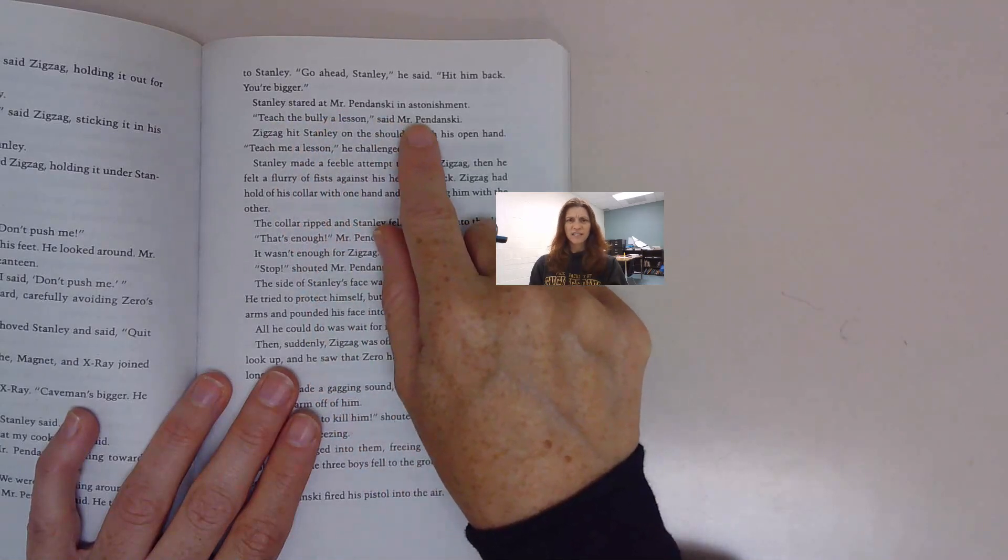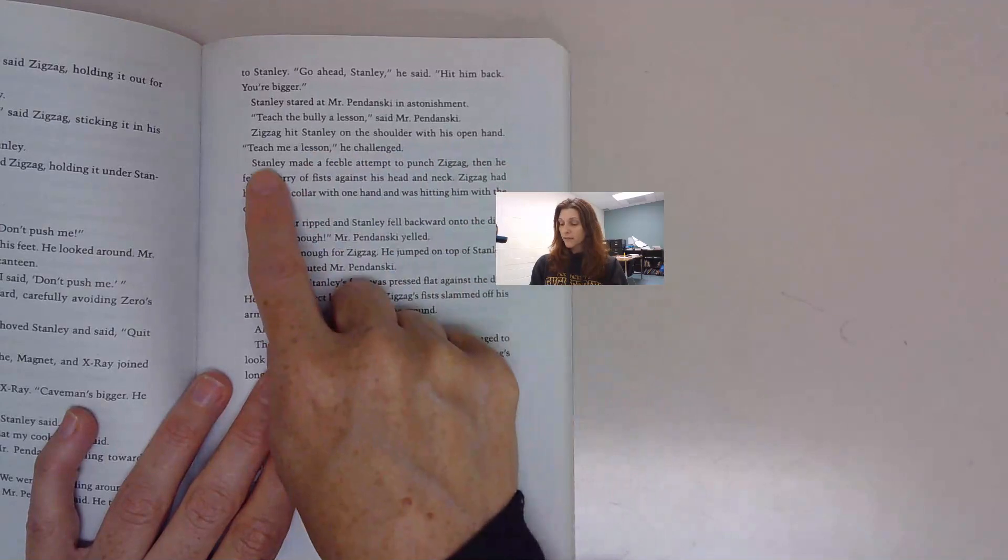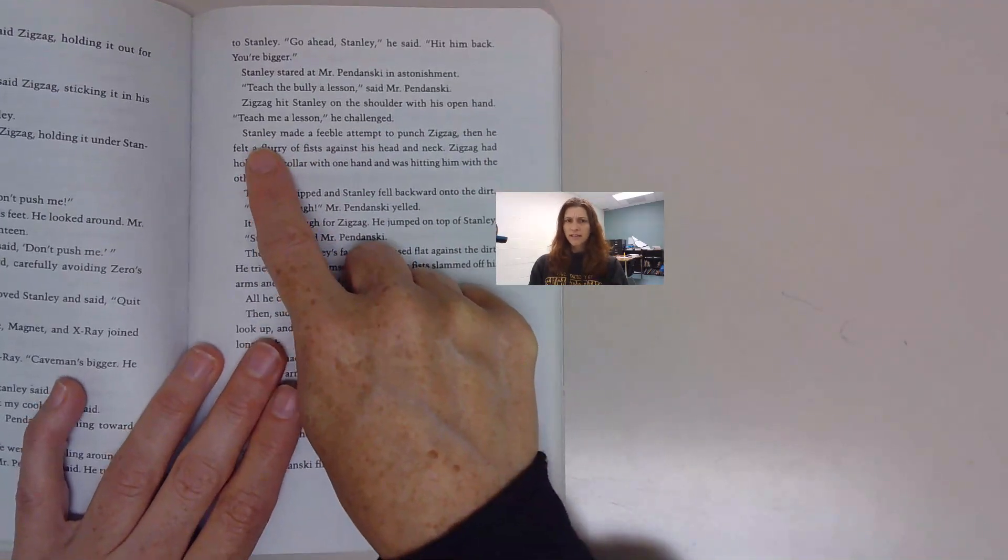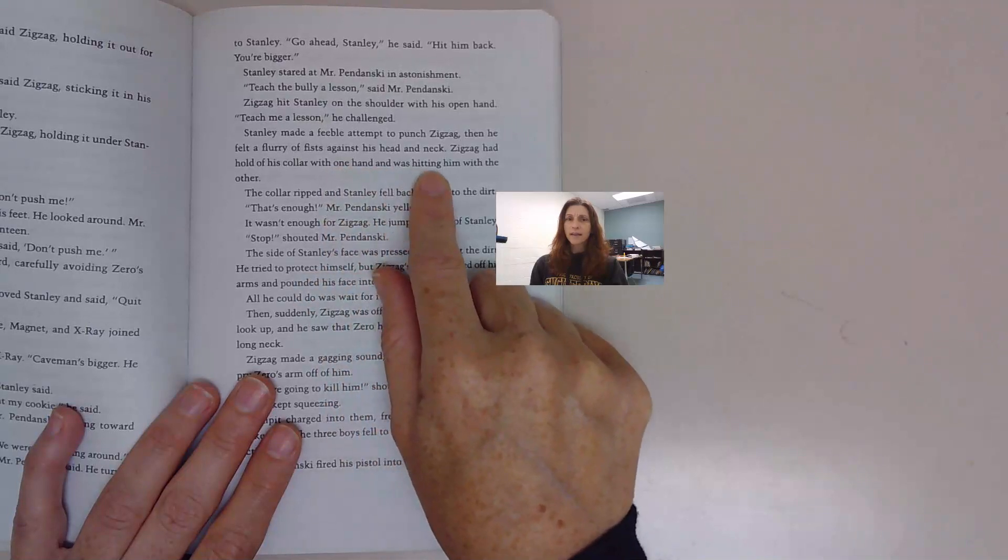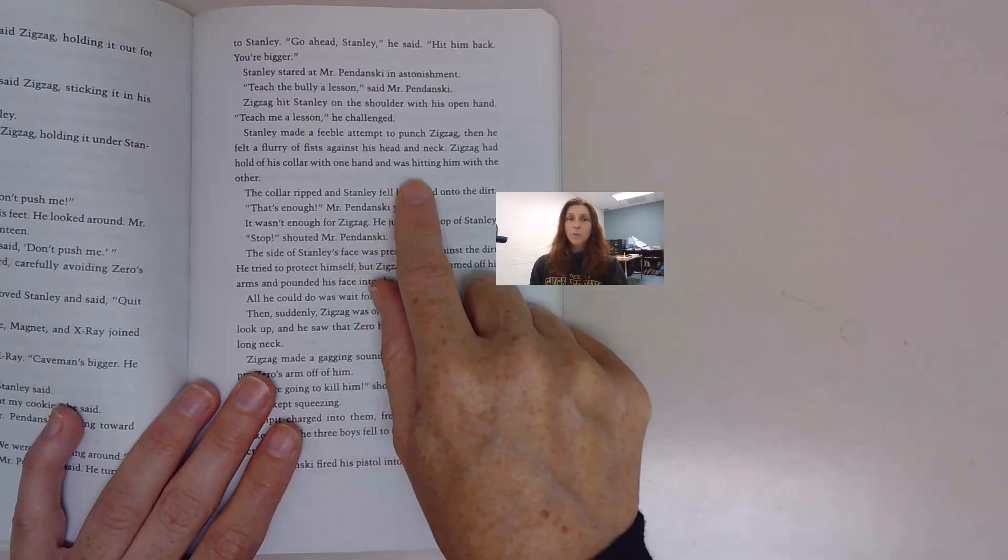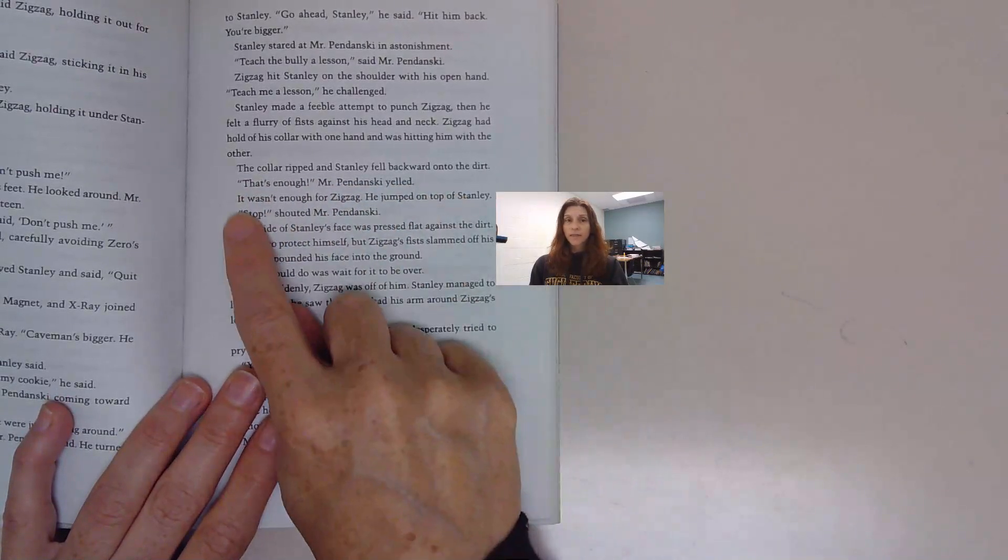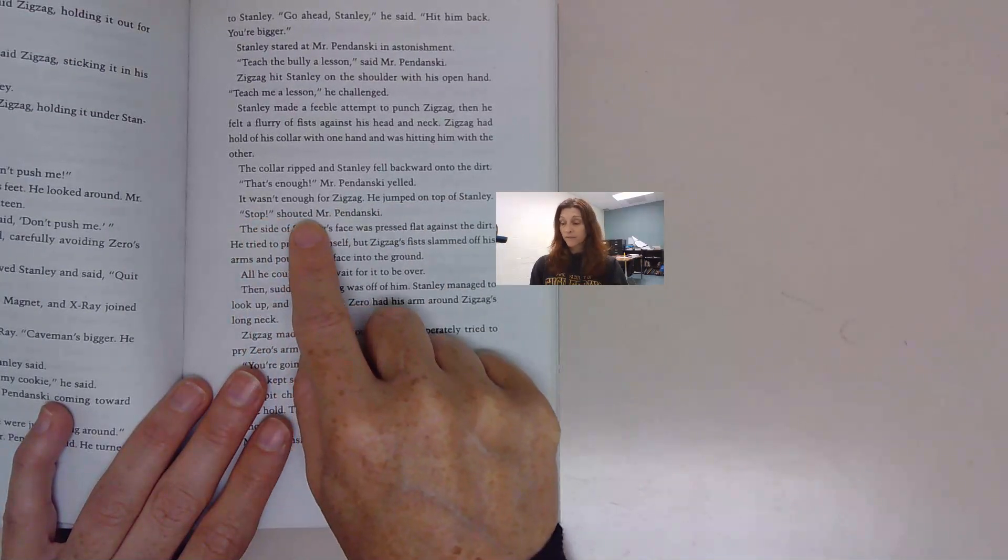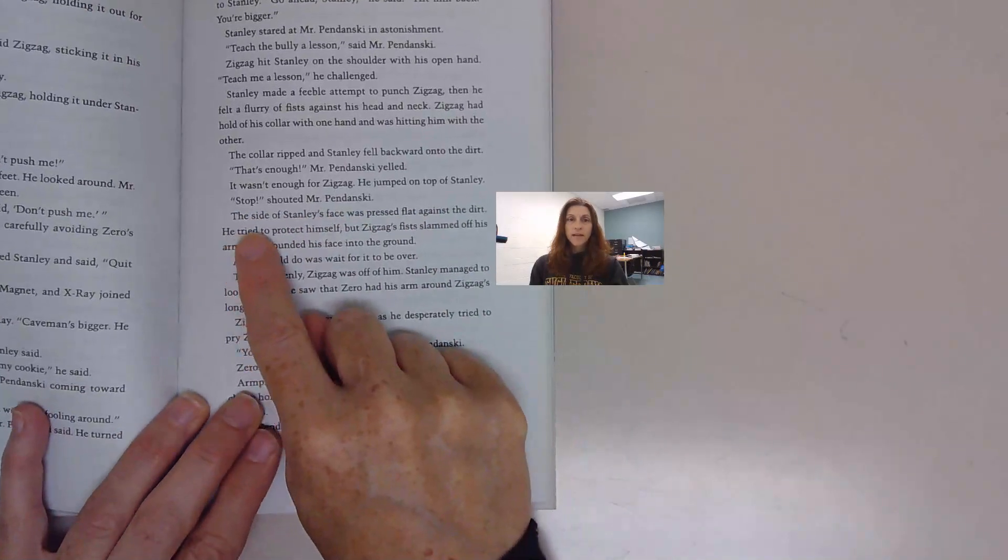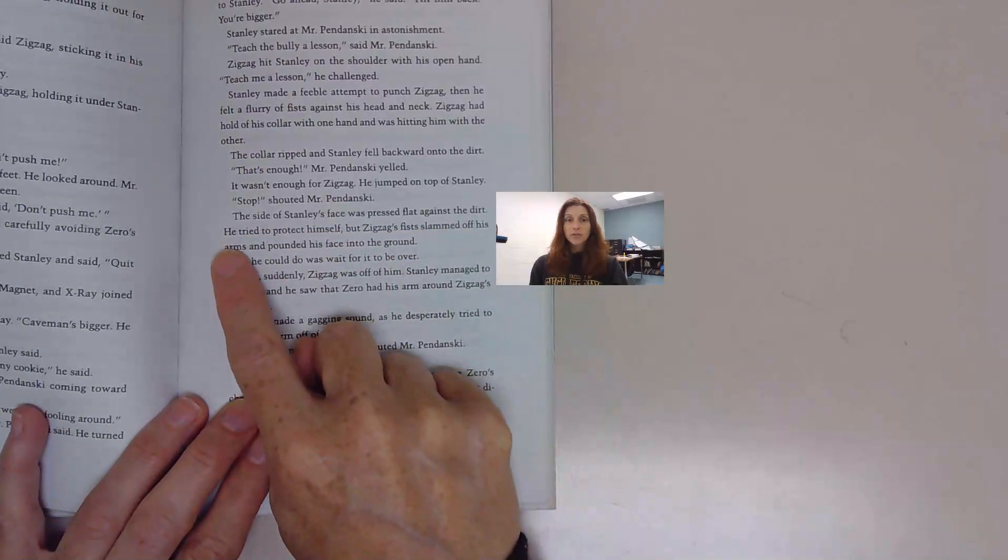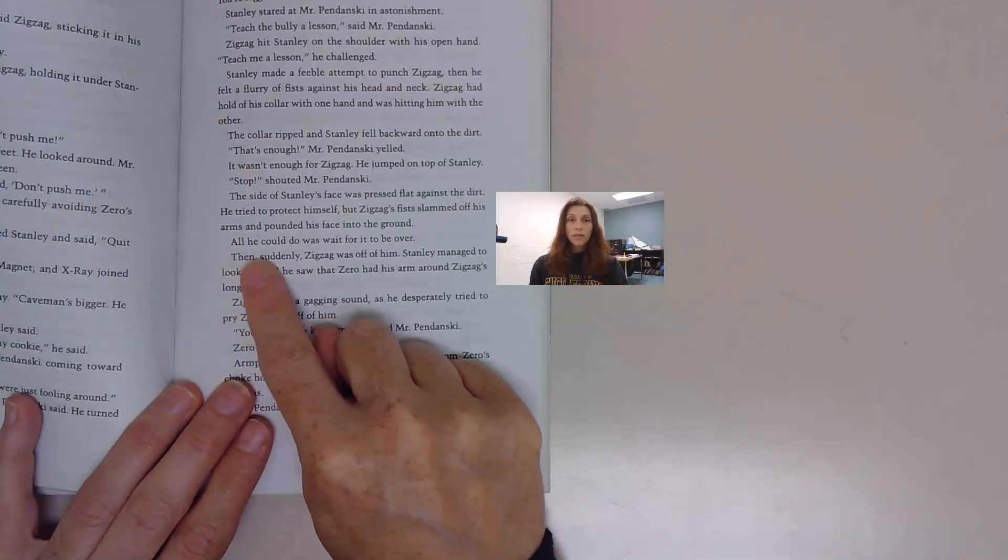Stanley stared at Mr. Pendanski in astonishment. Teach the bully a lesson, said Mr. Pendanski. Zigzag hit Stanley on the shoulder with his open hand. Teach me a lesson, he challenged. Stanley made a feeble attempt to punch Zigzag. Then he felt a flurry of fists against his head and neck. Zigzag had hold of his collar with one hand and was hitting him with the other. The collar ripped and Stanley fell backwards onto the dirt. The side of Stanley's face was pressed flat against the dirt. All he could do was wait for it to be over.